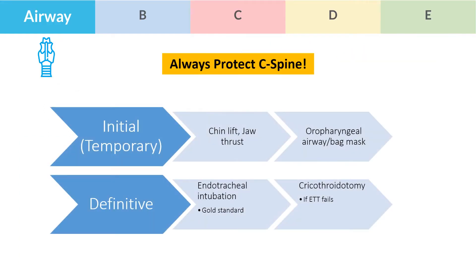The A in the ABCDE of the ATLS principles stands for airway. Should the patient have a GCS score of 8 or less, a definitive airway needs to be put in place, such as an endotracheal tube. Should this fail, a surgical airway is put in place under rapid sequence induction. When securing the airway, one needs to always remember to protect the C-spine.